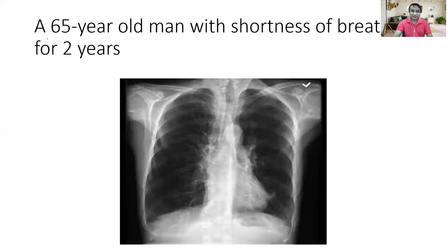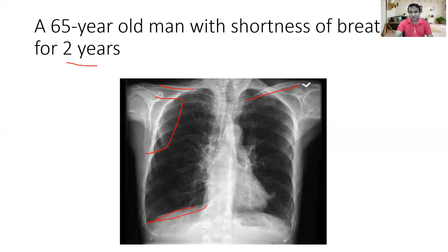Similarly, there is a 65-year-old gentleman with shortness of breath for two years. The clavicle appears horizontal and the scapula lies within the lung field — so this is probably the AP view. There is increasing radiolucency in both lung fields, and notably the diaphragm is flat rather than domed. This is the chest X-ray of a hyperinflated lung field — features include flattening of the diaphragm and hyperlucent lung fields, which are common features of emphysematous lung, consistent with COPD.